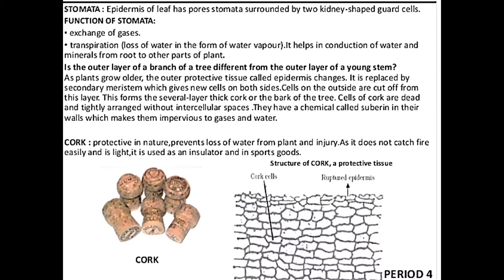How is this bark or cork formed? As the plant grows older, the outer protective layer or tissue called epidermis changes. It is replaced by a secondary meristem which gives new cells on both outside and inside. These cells are cut on both the inner and outer sides. Bark is made out of these cells — they are dead and arranged with no intercellular spaces. There is a substance called suberine, and it is impervious to gases and water.